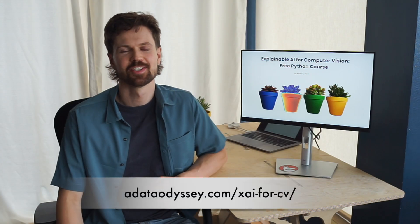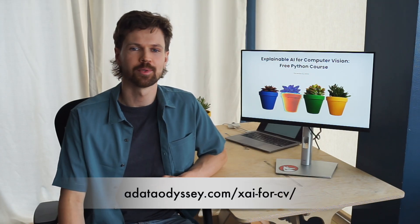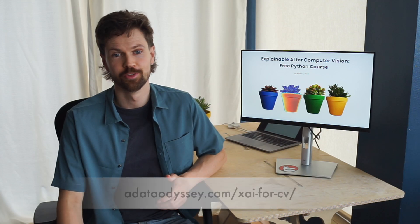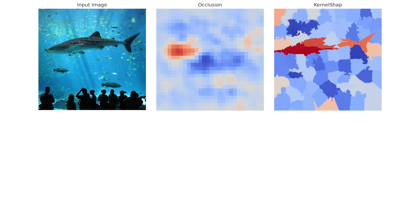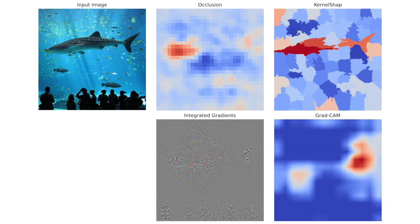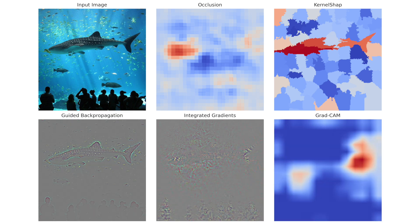So although occlusion has its limitations, it can still be a useful method when understanding computer vision models. This lesson is part of a wider explainable AI course for computer vision, where we go into detail on methods like occlusion, SHAP, Grad-CAM, integrated gradients, and guided backpropagation. That course is completely free, but there's also a paid version where you'll get access to a course certificate, quizzes, all of the videos ad-free, as well as an ebook which allows you to access the course content offline.